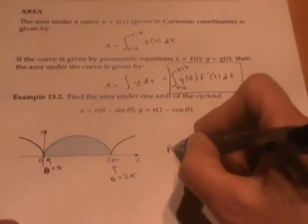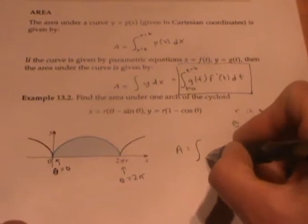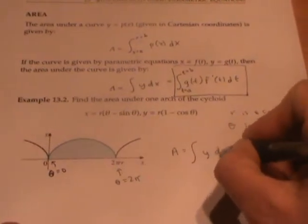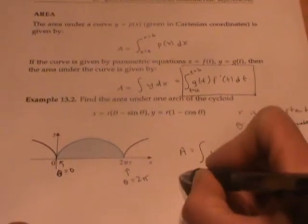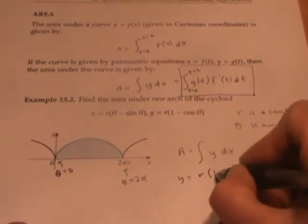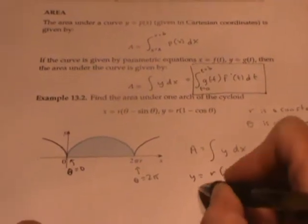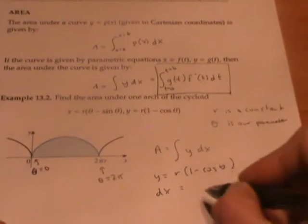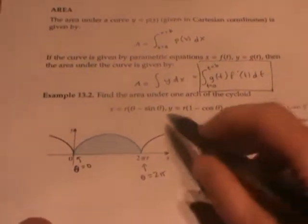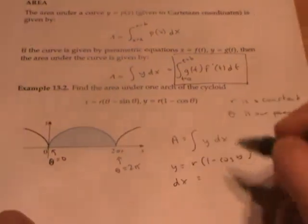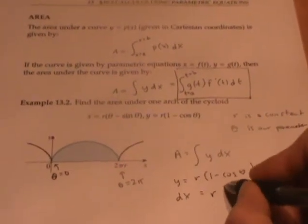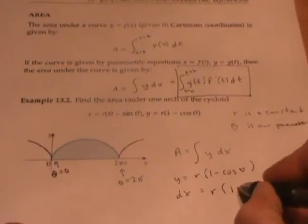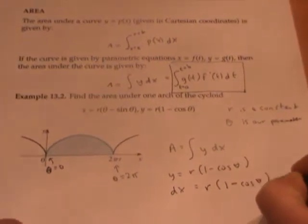We want to integrate y dx. We know our y is given by r times one minus cosine theta. And our dx is given by the derivative of this times d theta. So that's r times one minus cosine theta d theta.